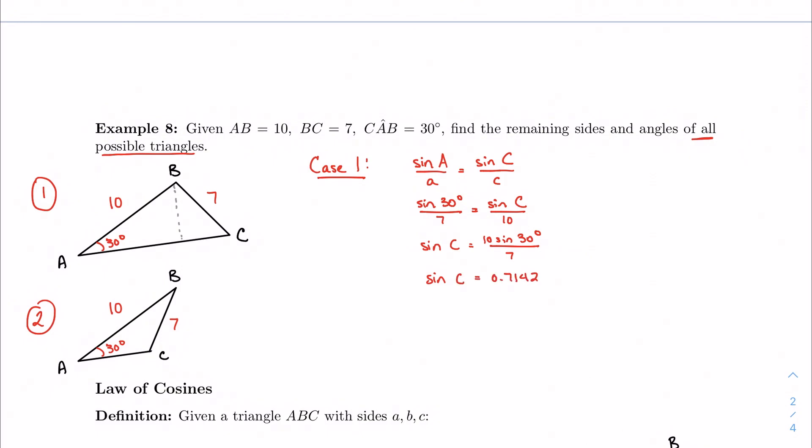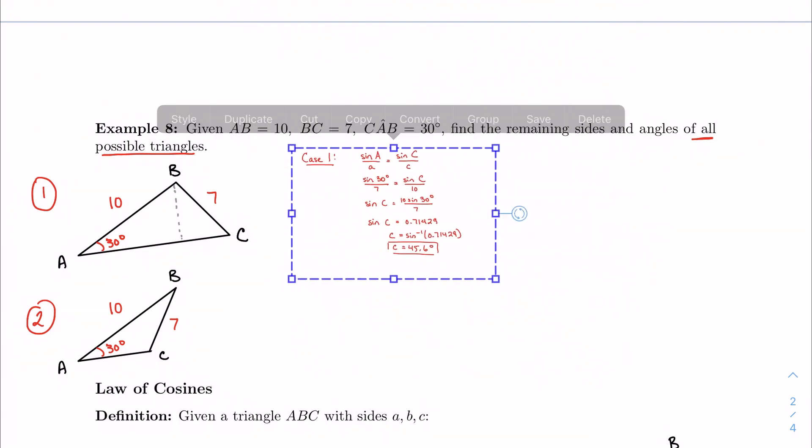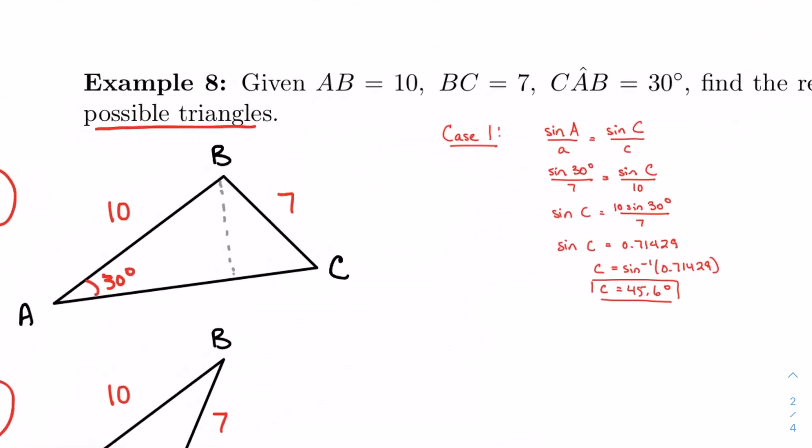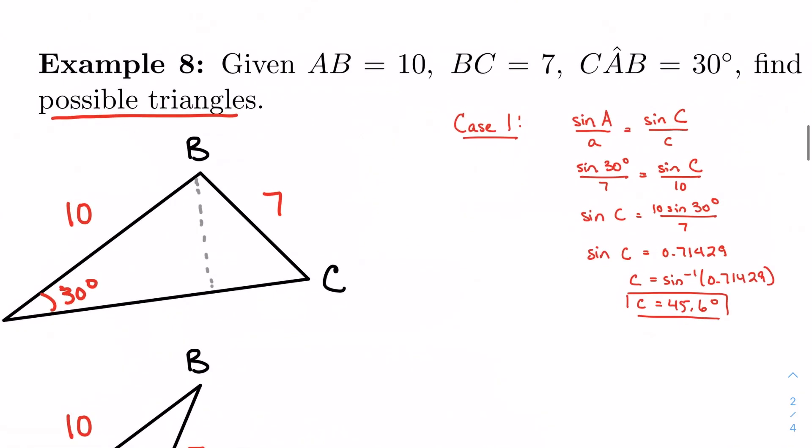I'm going to give you a few more than three significant figures for now. Remember to undo a sine, I'm going to take the inverse sine. So C is equal to inverse sine of that number. And that's going to give me 45.6 degrees. So I've got angle C in this case.